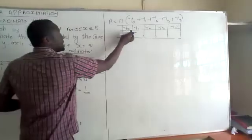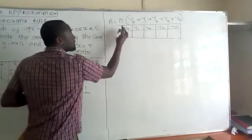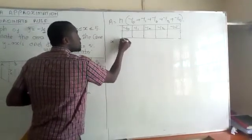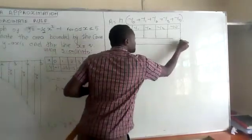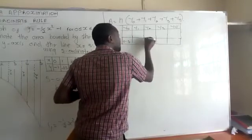So the first ordinate, y naught, is when x equals 0.5. We can add these values here so that we get our ordnates.